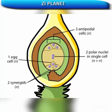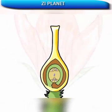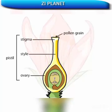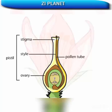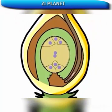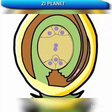Before this can happen, the male gametes, the sperm, must travel to these cells within the female's reproductive organs. To reach the embryo sac, a pollen grain that has landed on the stigma begins to germinate, sending a long pollen tube through the style and ovary. A haploid cell,